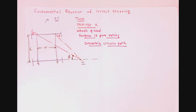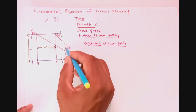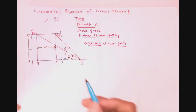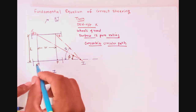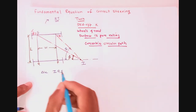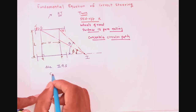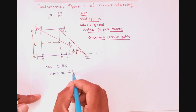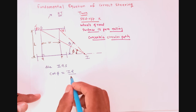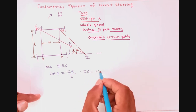The angle of the outer wheel at the center of rotation is angle phi, and the angle of the inner wheel is angle theta. From the first right-angle triangle IQS, which is right-angled at Q, we have cot(phi) equals adjacent side IQ upon opposite side QS, which equals L. Therefore IQ equals L·cot(phi).